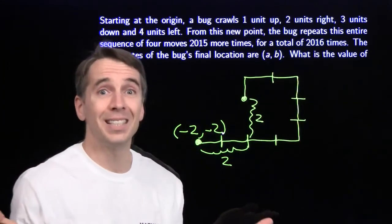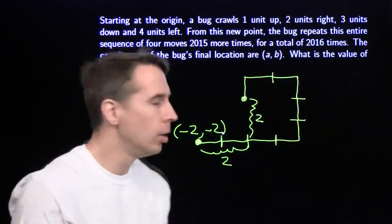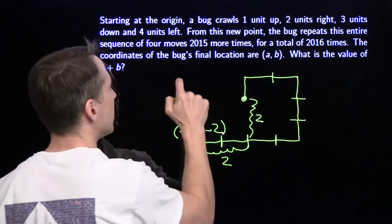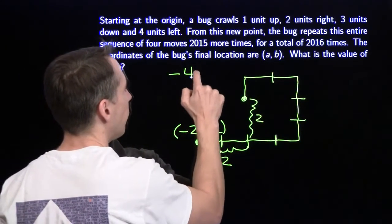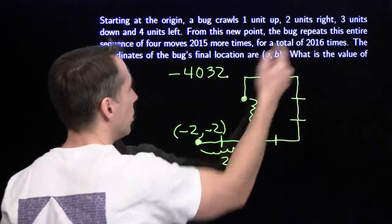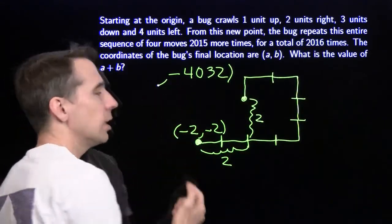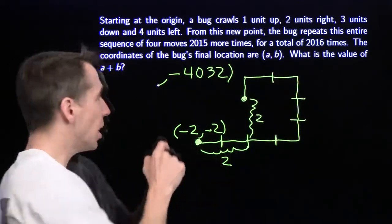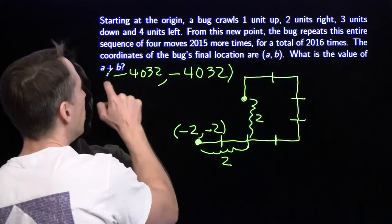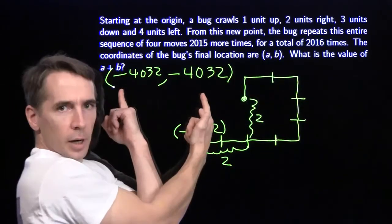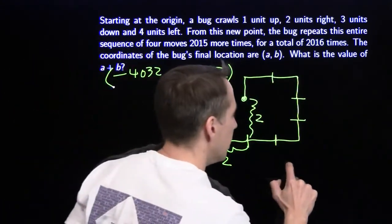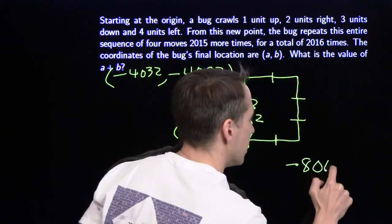Doing this 2,016 times: going down 2 each time gives a total of down 4,032. Going left 2 each time gives a total of left 4,032. So the bug ends at (−4032, −4032). Adding the coordinates: −4032 plus −4032 equals −8,064.